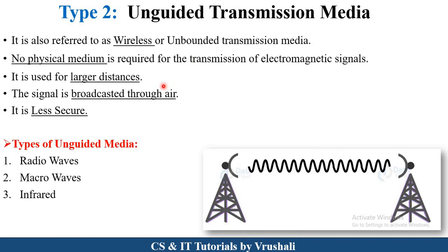The next type is unguided transmission media. Unguided transmission media sends information through the air — it broadcasts information through the air and is referred to as wireless media. There is no physical medium or cable present between one device and another device. That's why unguided media is used for larger distance purposes, and it is less secure. There are three types of unguided media.